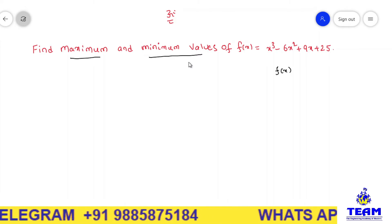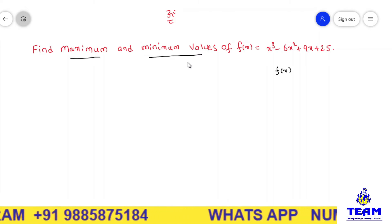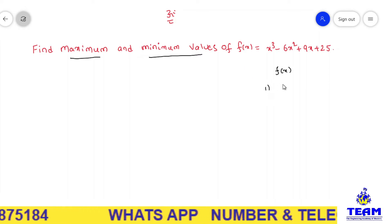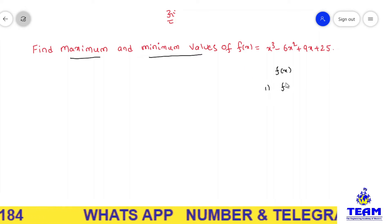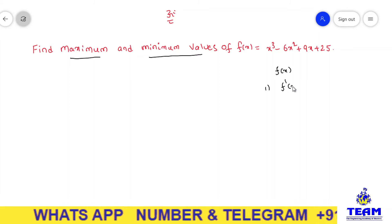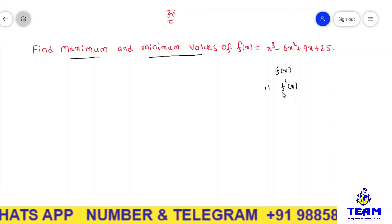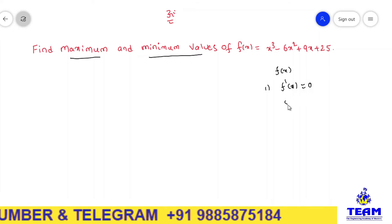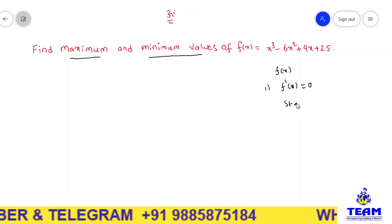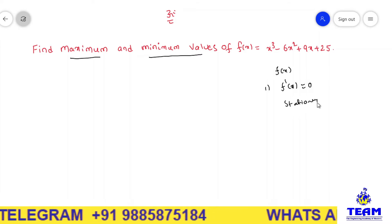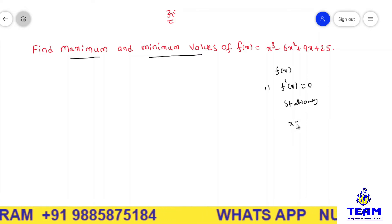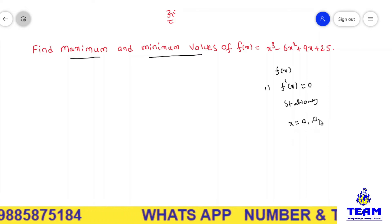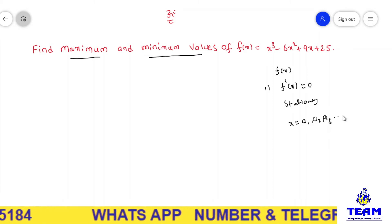Later, at each stationary point, we have to discuss the second derivative sign. In step 1, we have to differentiate the given function with respect to x to get f dash of x. After that, equate to 0 to get the stationary points — let us consider them as x equal to a1, a2, a3 and so on.